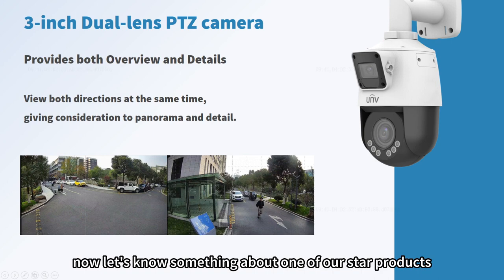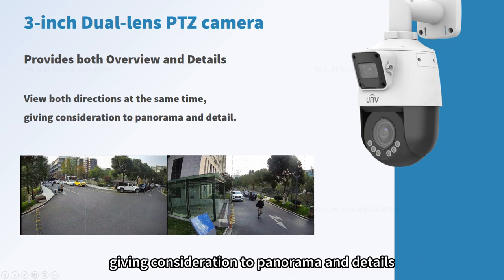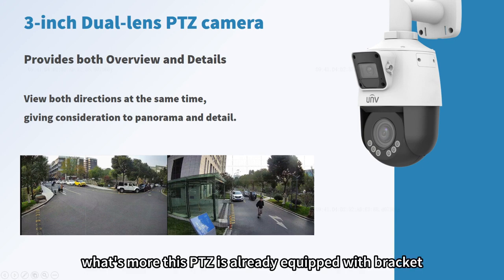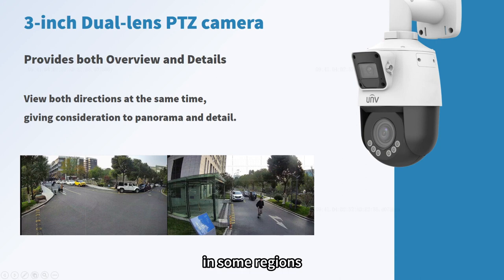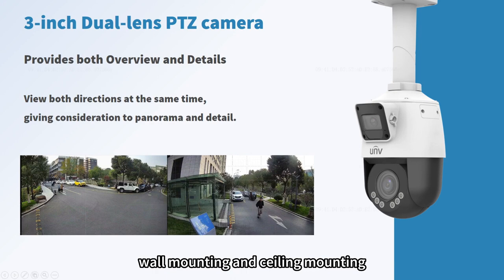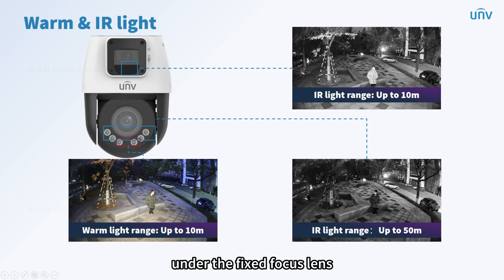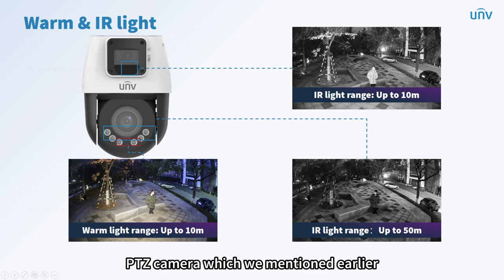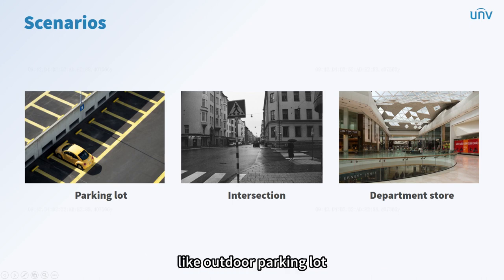Now let's look at one of our star products: the dual-lens PTZ camera. Its biggest highlight is that it can view both directions at the same time, giving consideration to panorama and details — one camera performing the functions of two devices to save costs. This PTZ already comes equipped with a bracket, so you don't need to purchase or choose a bracket separately, which also solves the problem of high bracket tariffs in some regions. It supports two installation methods: wall mounting and ceiling mounting. The PTZ part has four infrared lights and two warm LED lights, and supports three lighting modes like the Active Deterrence Series, making it very suitable for open areas like outdoor parking lots, intersections, and department stores.